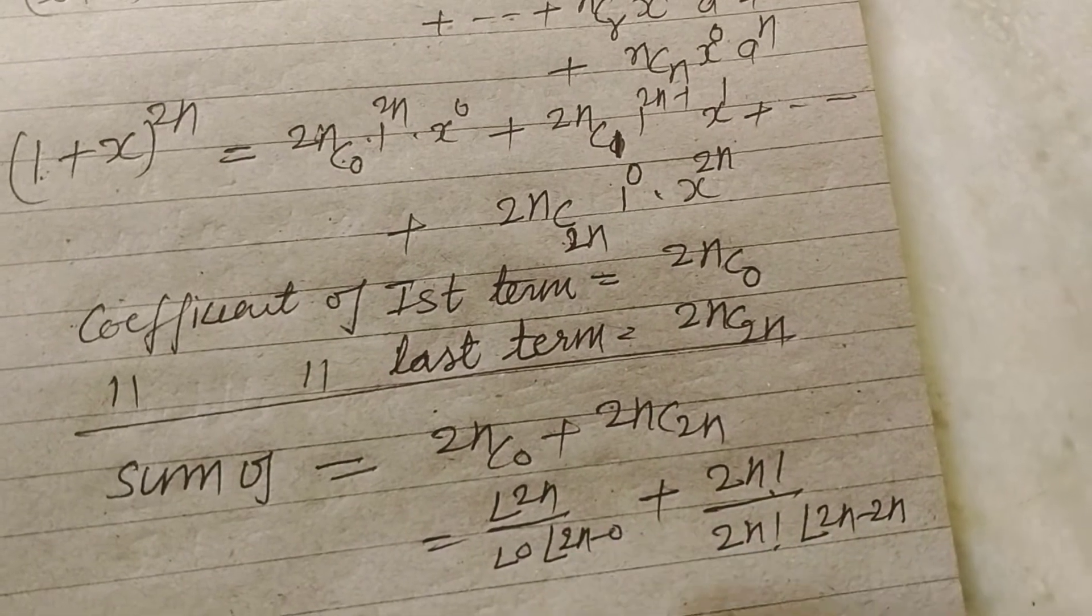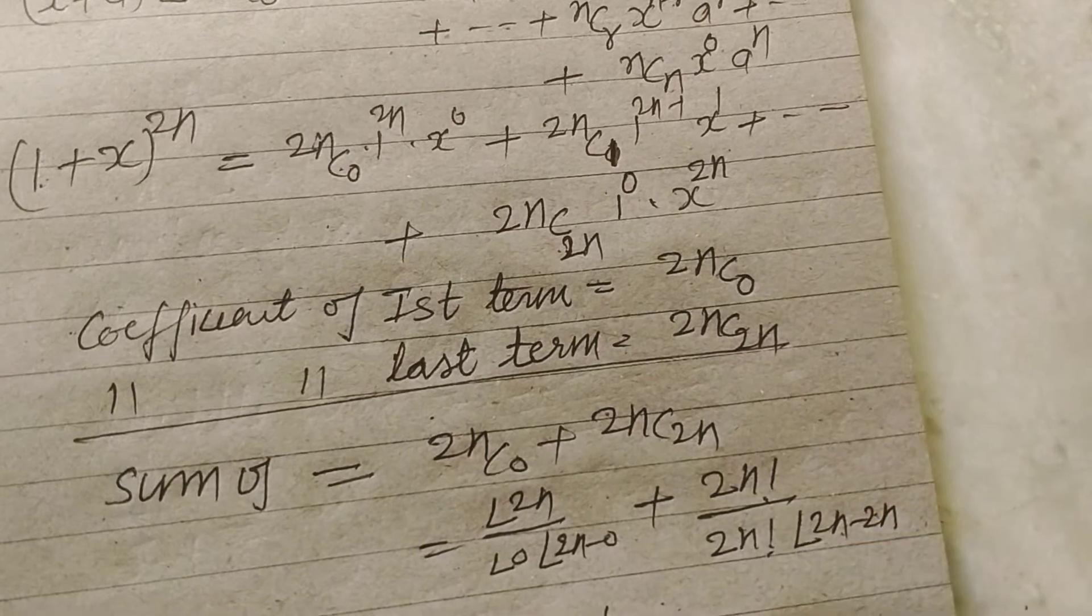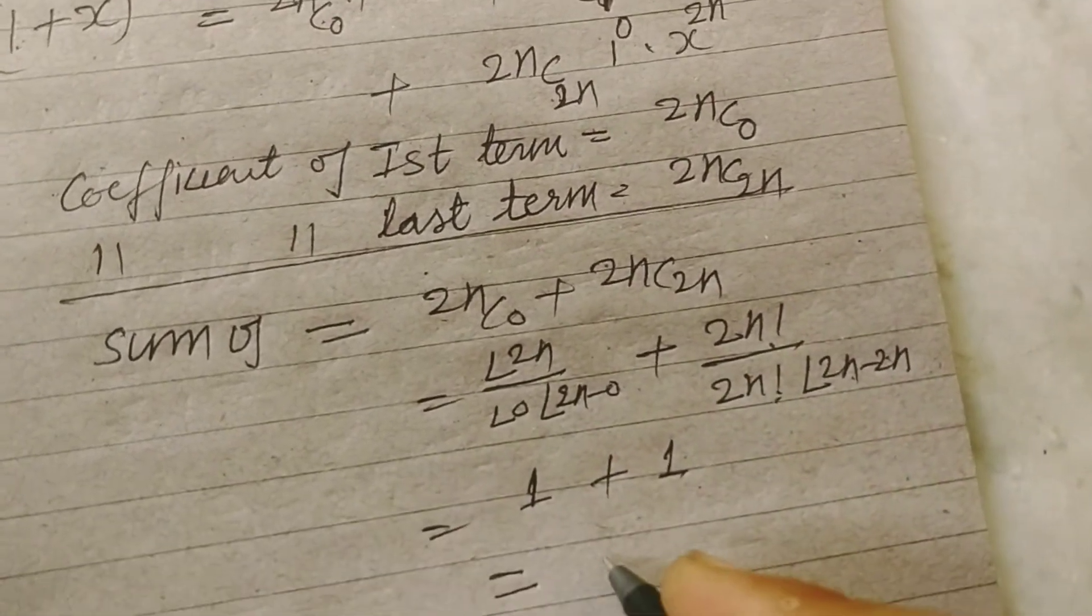So this becomes 1 and this also becomes 1, so 1 plus 1 is 2.